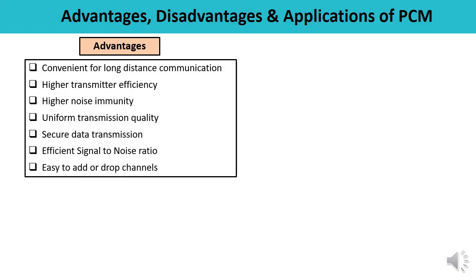Now let's talk about the advantages, disadvantages, and applications of PCM. Some major advantages: PCM is convenient for long distance communication; transmission efficiency is high; noise immunity is high; it provides uniform transmission quality, which is why it is commonly used for data transmission; it provides secure data transmission; the signal-to-noise ratio is efficient; and when designing a system using PCM, adding, deleting, or dropping a channel is very easy.